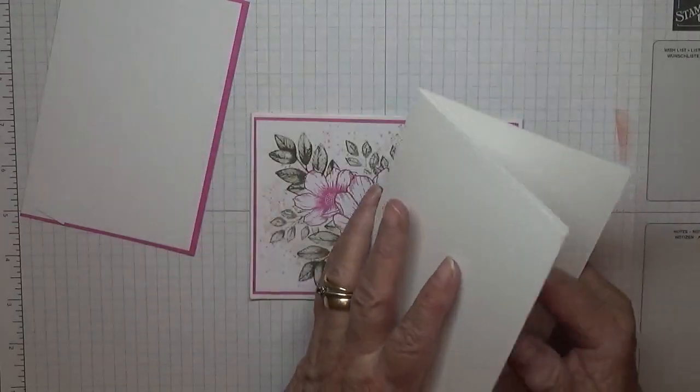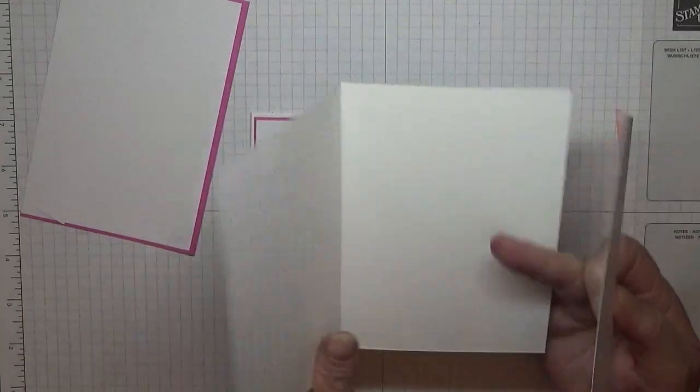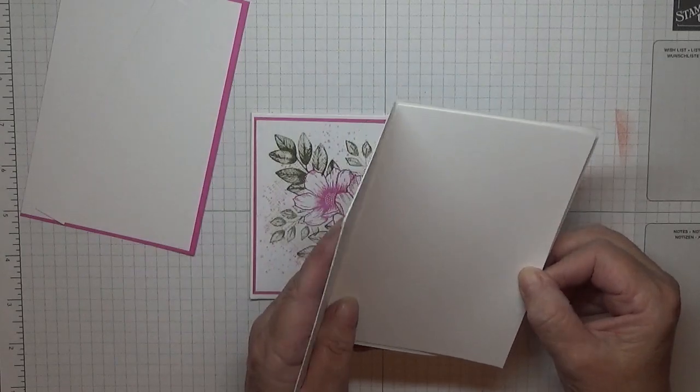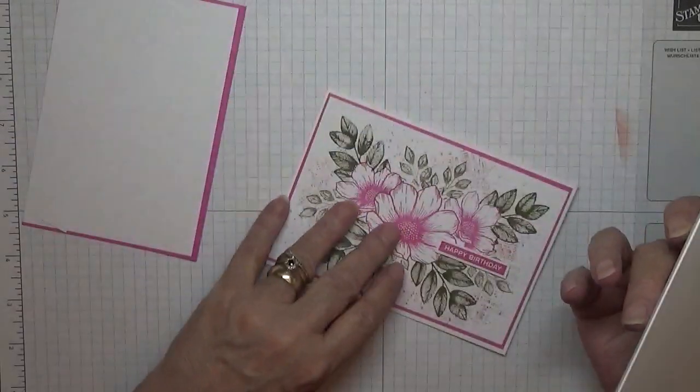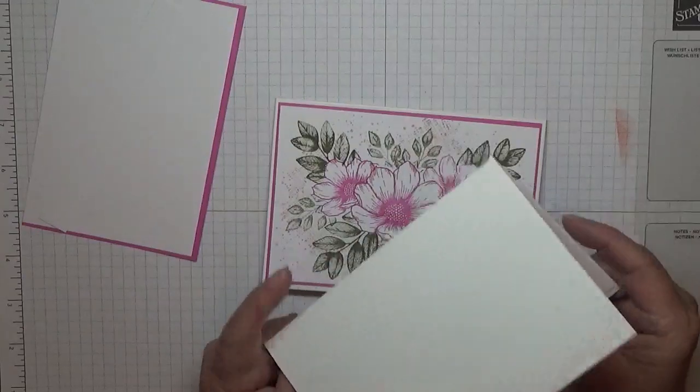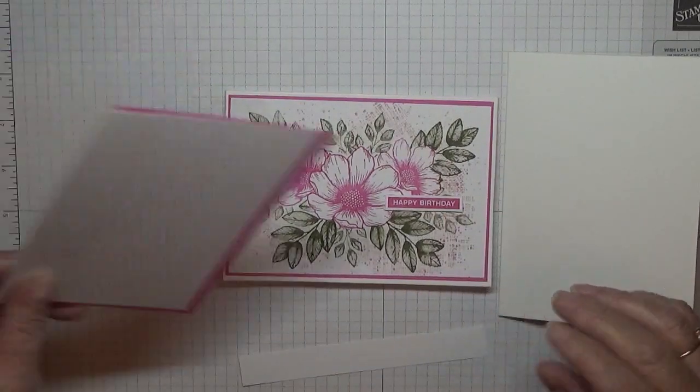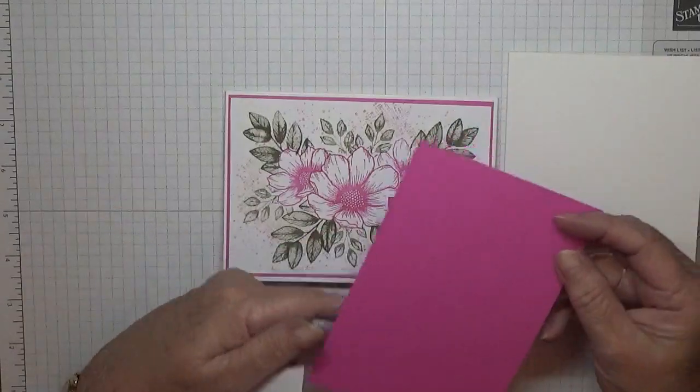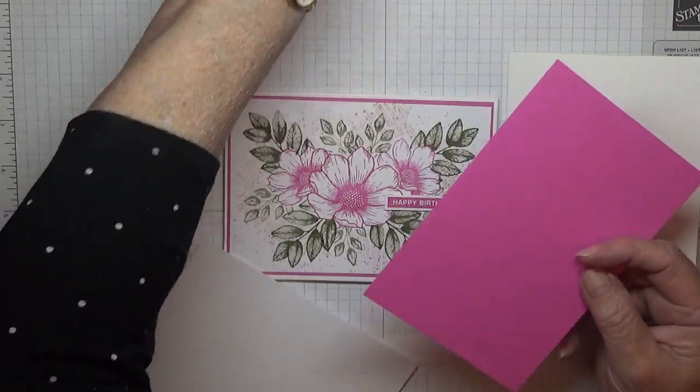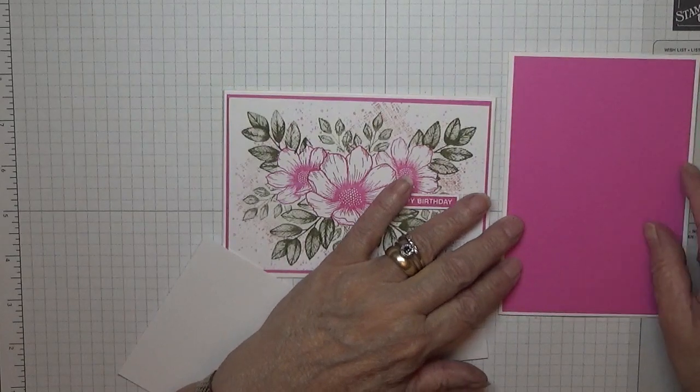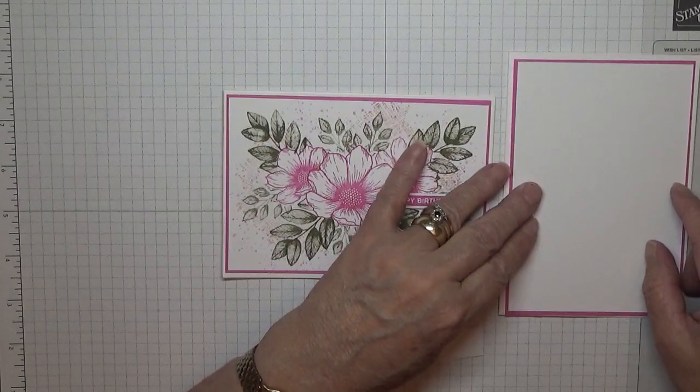I've got a card base of eight and a quarter by five and seven eighths, scored at four and one eighth and folded in half. Also got a piece of card at five and five eighths by three and seven eighths to go on the inside, although I won't be doing the inside because I haven't done one on here yet. A strip for the happy birthday. I have a piece of magenta madness at five and five eighths by three and seven eighths, and a piece of white card at three and three quarters by five and a half, and that's what we'll be stamping on.